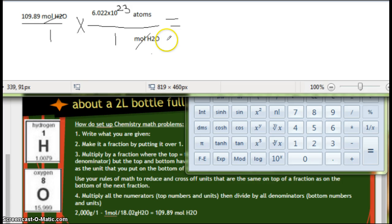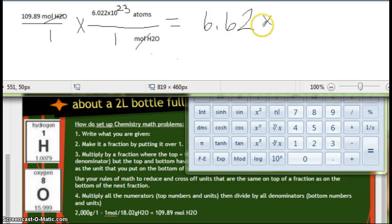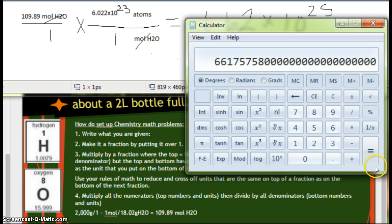So it would be 6.62 times 10 to the 25th atoms of H2O. So if you get a 2-liter bottle of water, this is how many atoms are in it. It's kind of cool if you think about it that way.